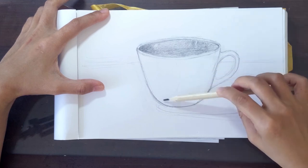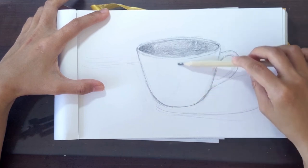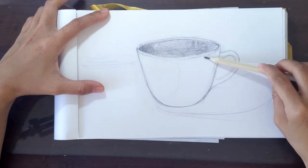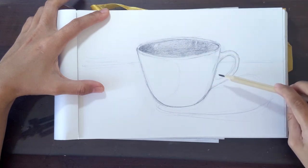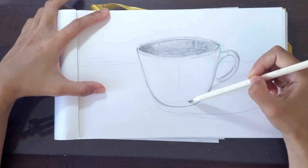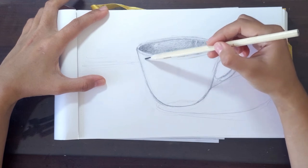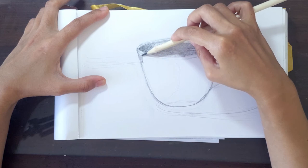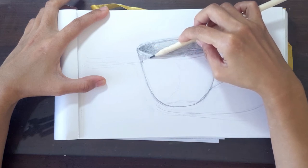Now we shade the body and the handle of the cup. Draw some guidelines to separate the dark areas and the light areas. After doing this, lightly shade the dark areas as evenly as possible.